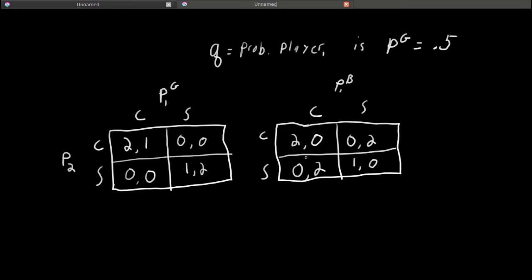So, player 1's action space has to specify what he will do for all possible types. So, let's go ahead and list out player 1's new action space.